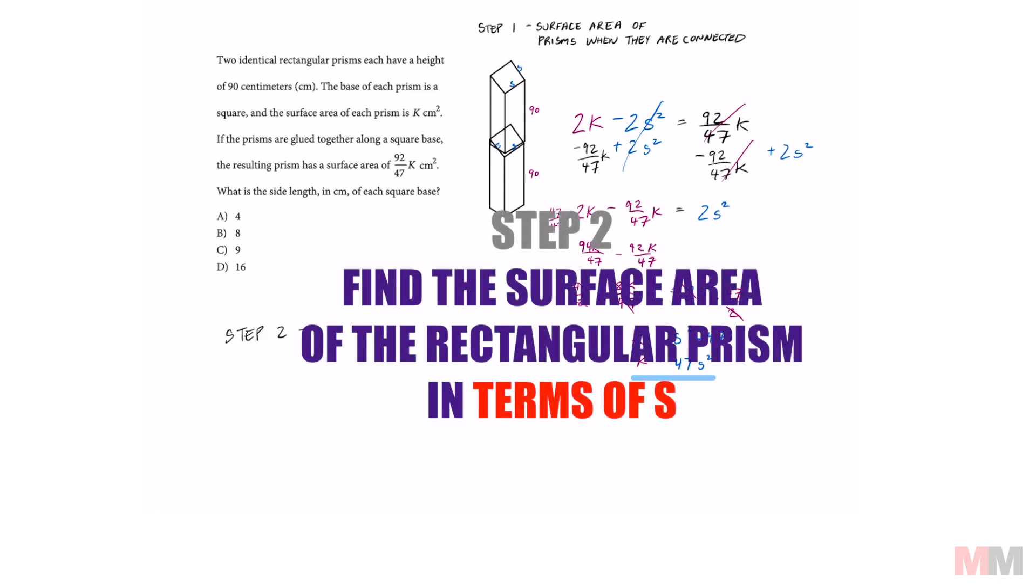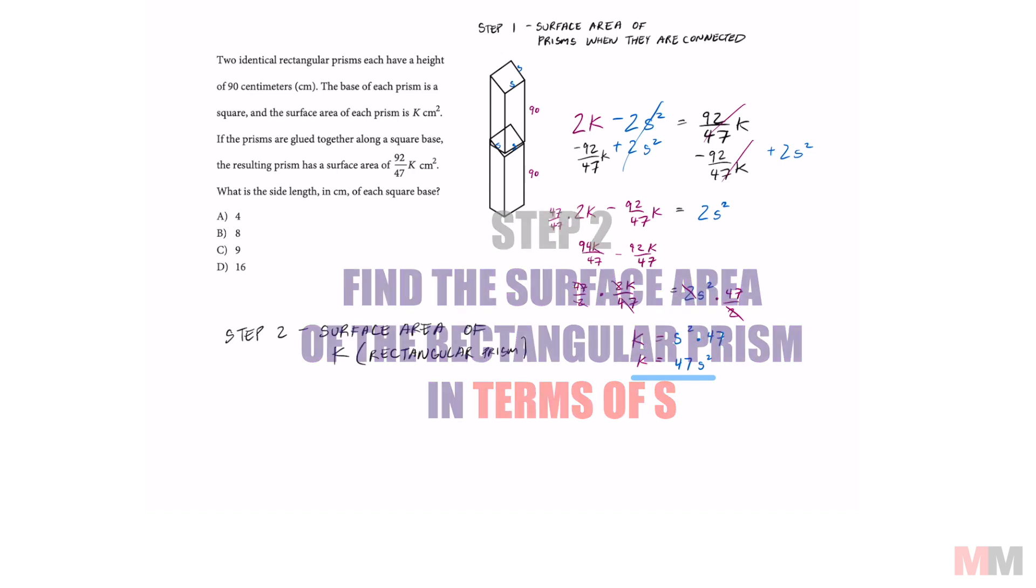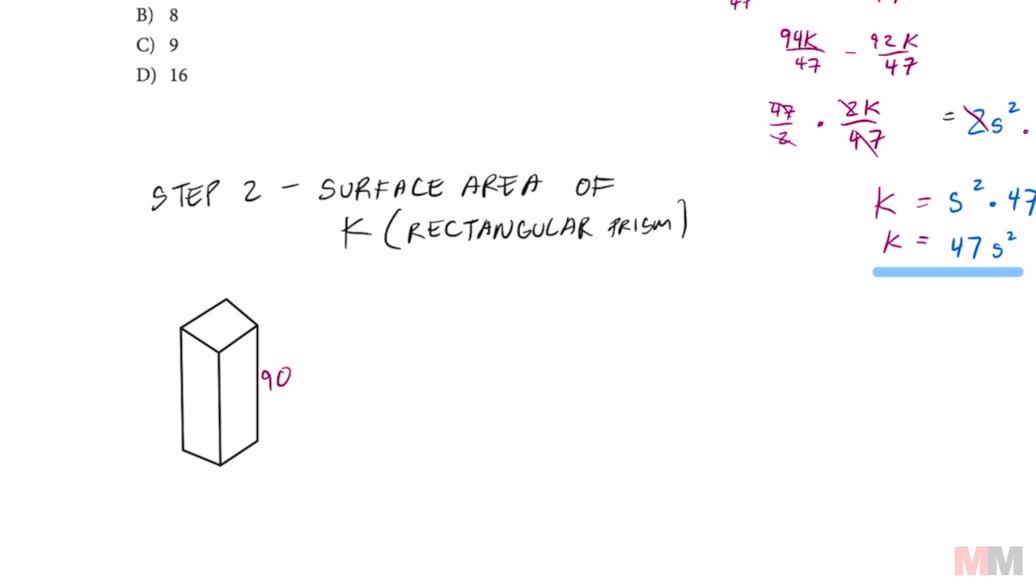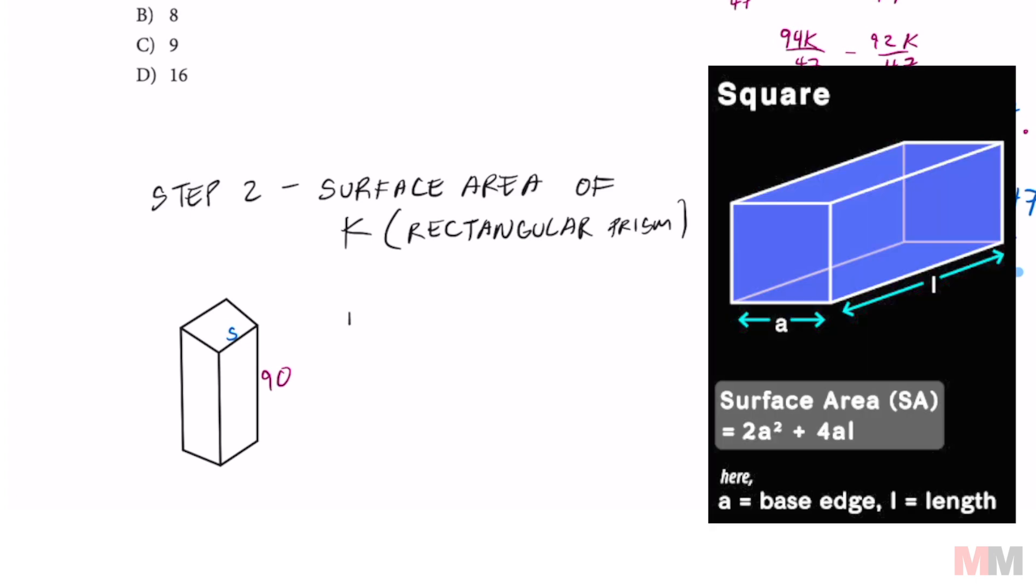Step two, which is just finding the surface area of one of the rectangular prisms. So let's redraw that one more time. Surface area is just adding up the area of each of these panels. And there are six panels. We said that that had a height of 90 and a side length of S. So to find the surface area of that, which is K.